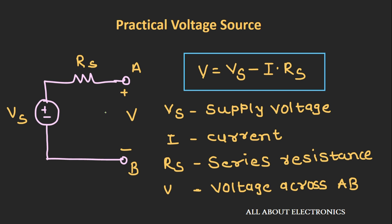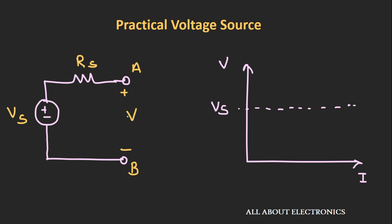As the current I drawn through the supply increases, the voltage drop across the series resistance Rs will increase, and because of that, the voltage appearing across the terminals will reduce. To reduce this drop, the value of Rs should be as low as possible. In practical voltage sources, the value of this series resistance is in the range of a few ohms to tens of ohms.